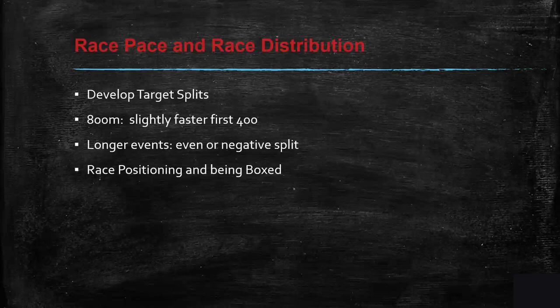Race pace and race distribution: develop target splits. For example, the 800 meters is split slightly faster than the 400 meters. There are many charts and books available for target splits — there's also a running calculator I can recommend that gives splits based on an individual's PR and races, which is a good indicator. It won't be perfect, but it will be pretty close. As you train, you'll find out what your athletes' capabilities are.